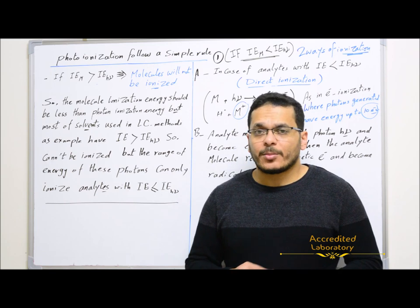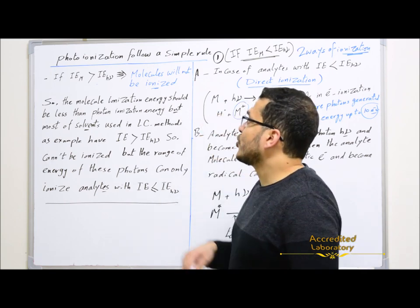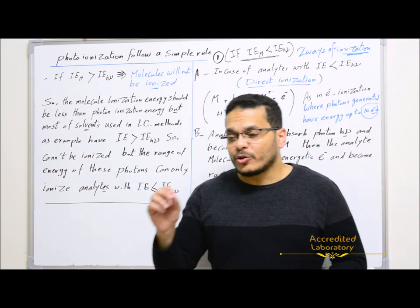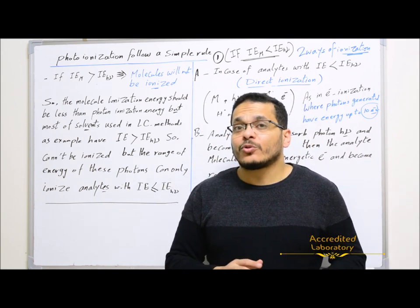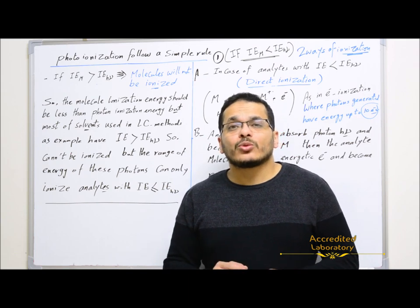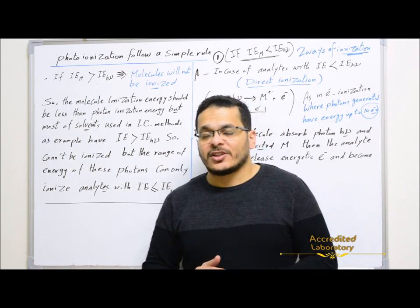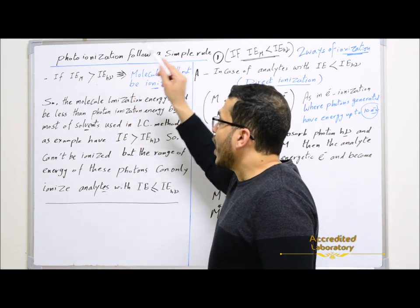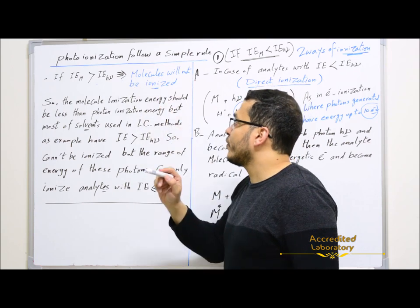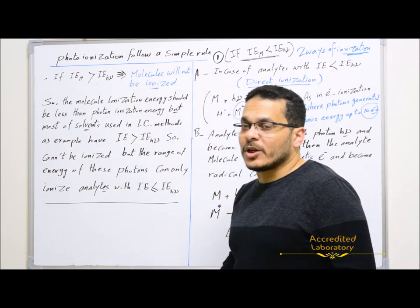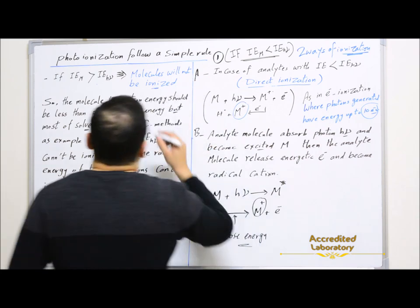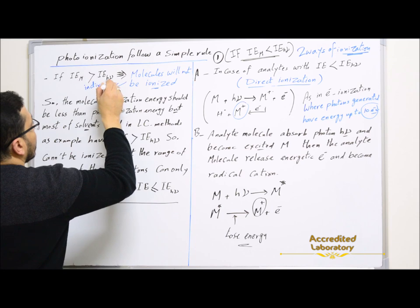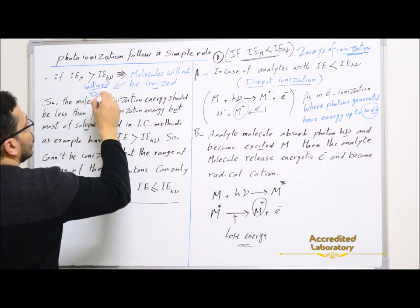But how does this ionization happen? Photo ionization follows a simple rule. If the ionization energy of the molecules is lower than the ionization energy of the photons, the analyte molecules can be ionized by direct ionization. But if the ionization energy of the molecules is higher than the ionization energy of the photons, molecules will not be ionized by these photons, but there will be indirect ionization by using something called a dopant.